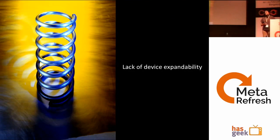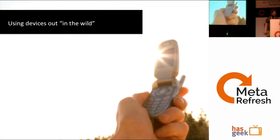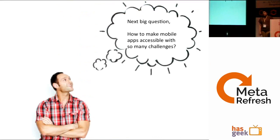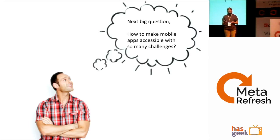There's also lack of device expandability — memory is limited. And you don't know what context you'll be using your mobile device in, so context could be something very different. With all these challenges, how do I make my mobile application accessible?